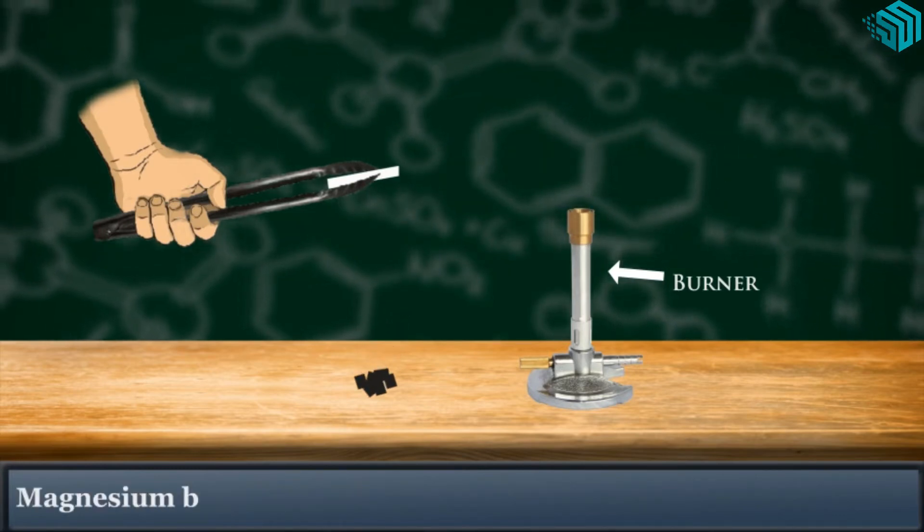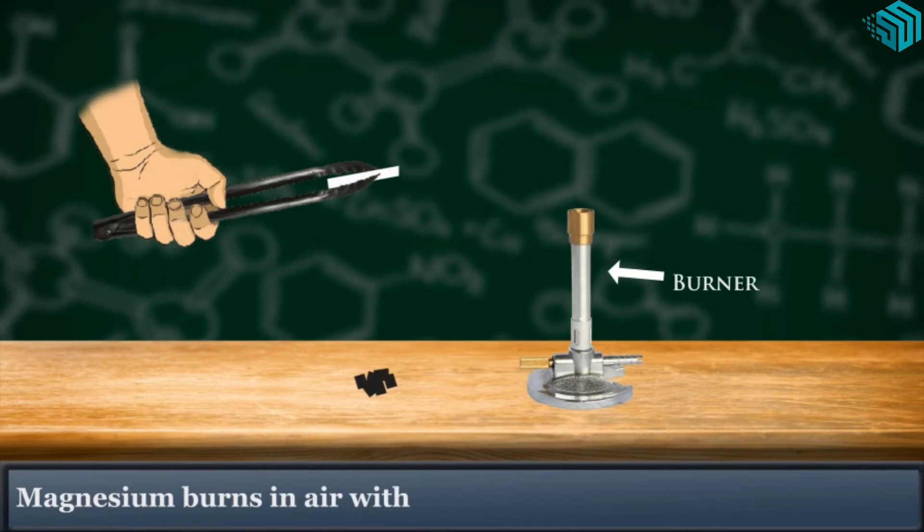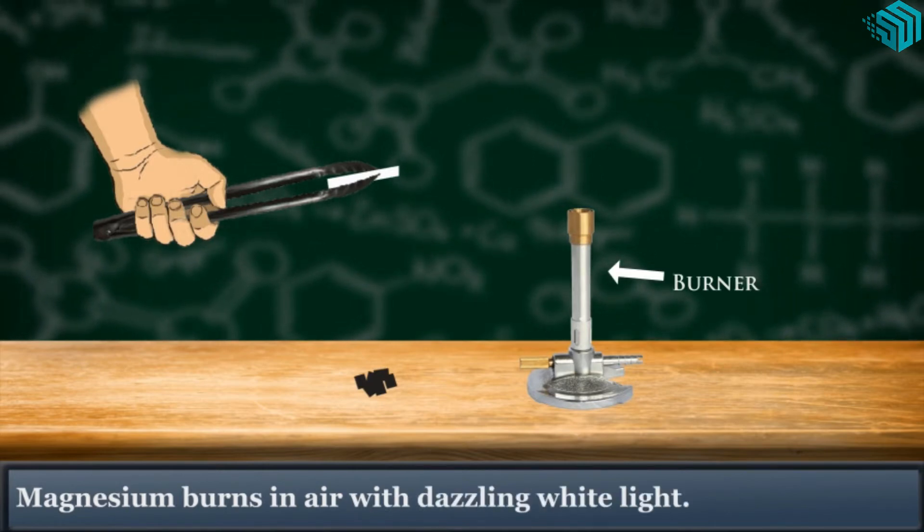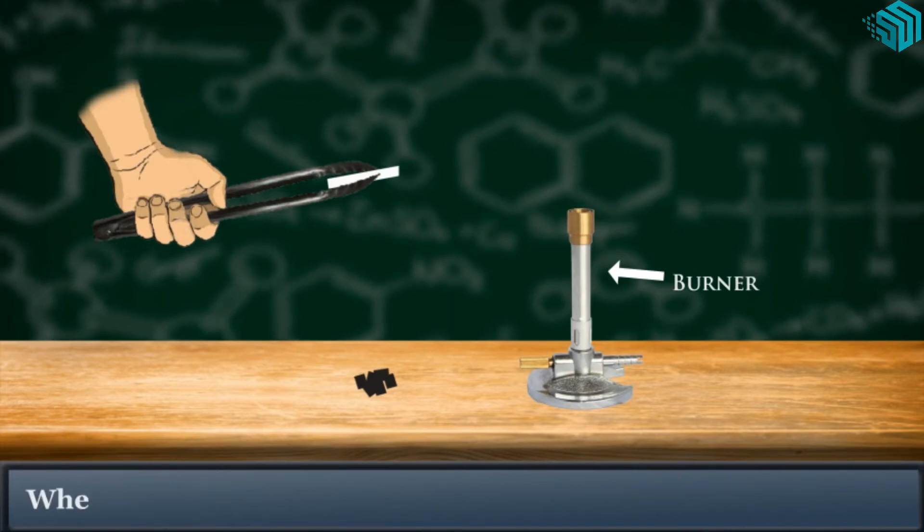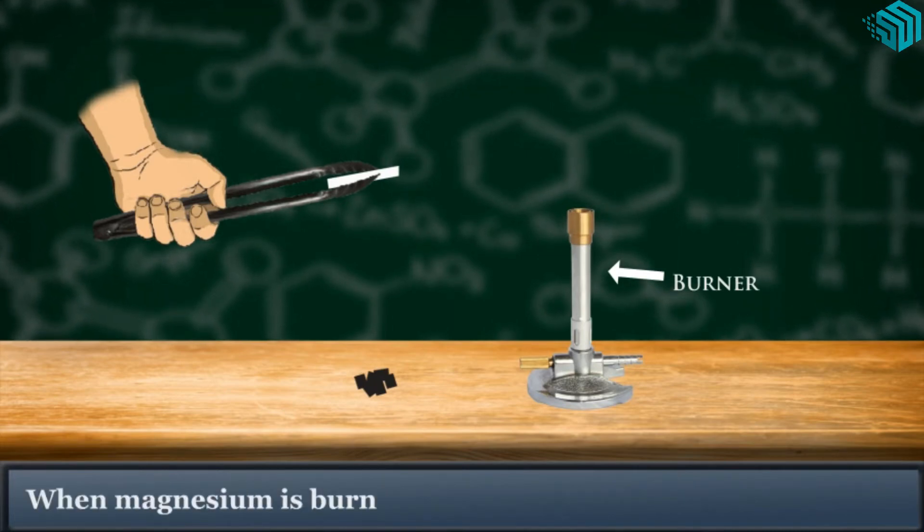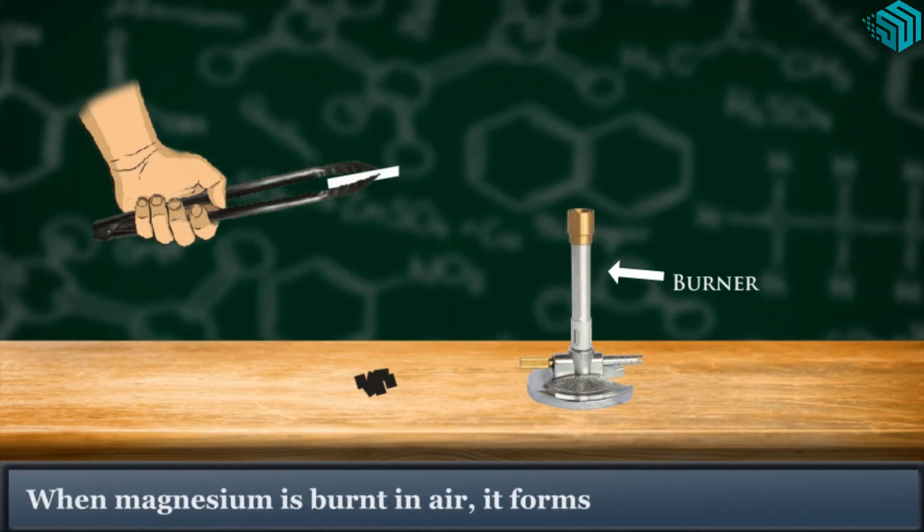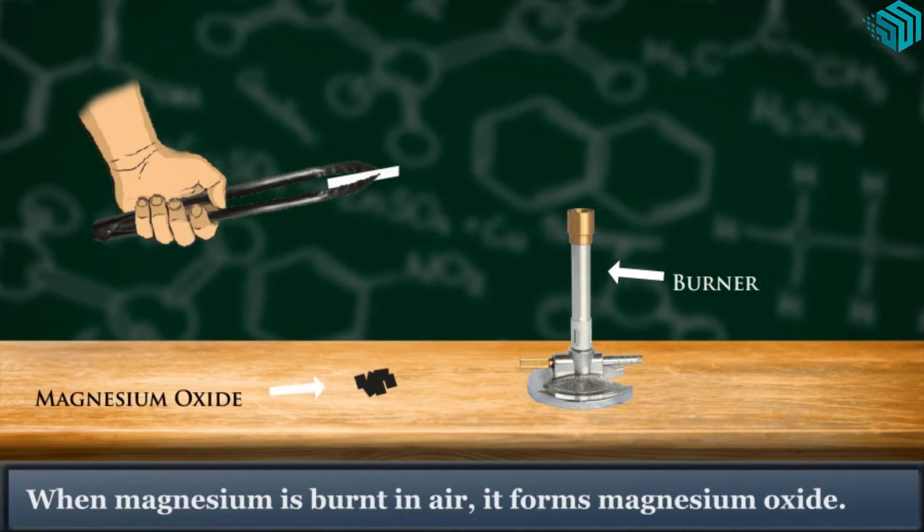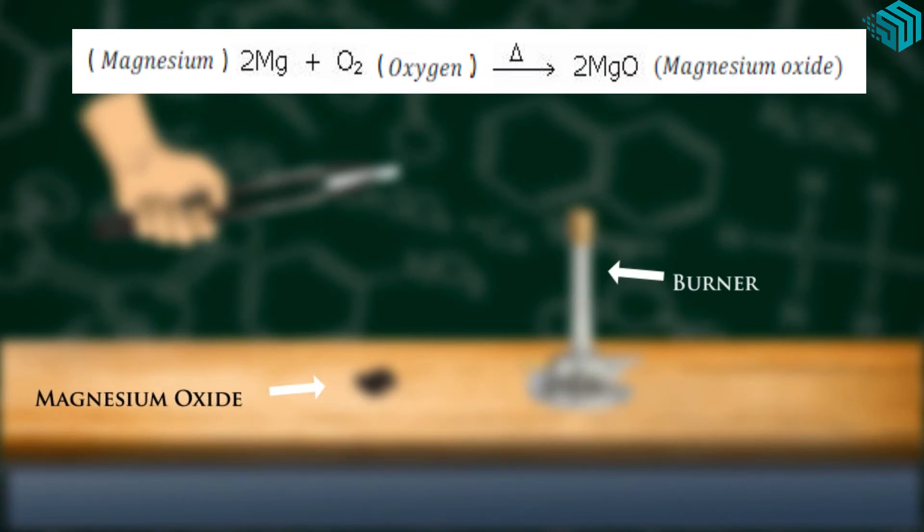Magnesium burns in air with dazzling white light. When magnesium is burnt in air, it forms magnesium oxide. Magnesium plus oxygen gives magnesium oxide.